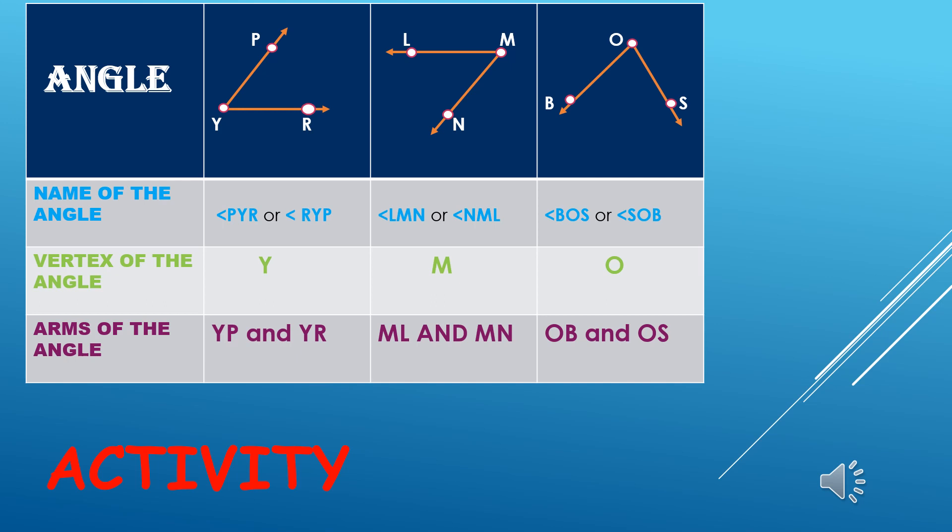So how do we read the angle? We have to make sure that the vertex of the angle must be in between. So I can read it as angle PYR or angle RYP — I can read it in two ways.